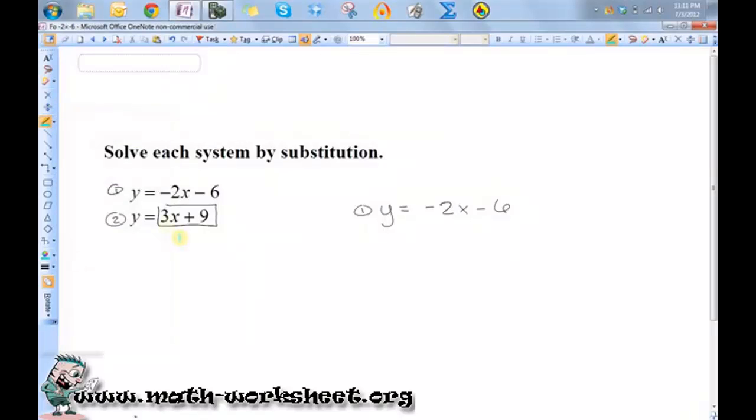So I'm just going to take this and put it in here. So 3x plus 9 equals negative 2x minus 6. So now all I just need to do is solve for x.